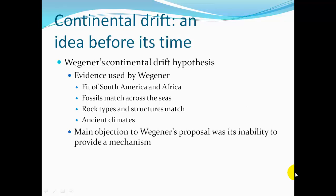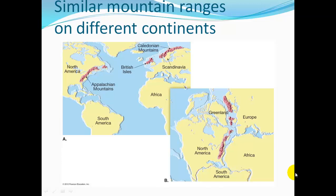The main objection to Wegener's proposal was that it didn't provide a mechanism for how the continents drifted. For example, if we put North America together with Europe and Africa, the Appalachian Mountains line up with the Caledonian Mountains — similar mountain ranges that, when fit together, form one continuous mountain range.